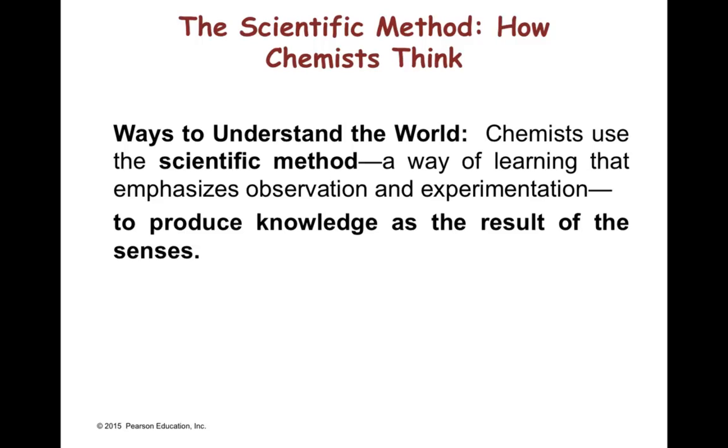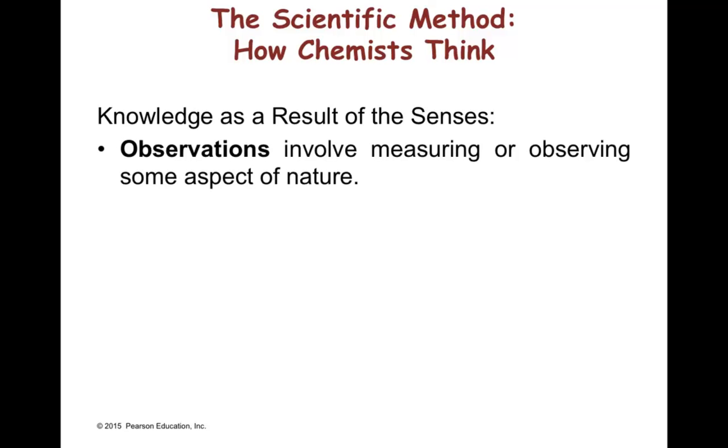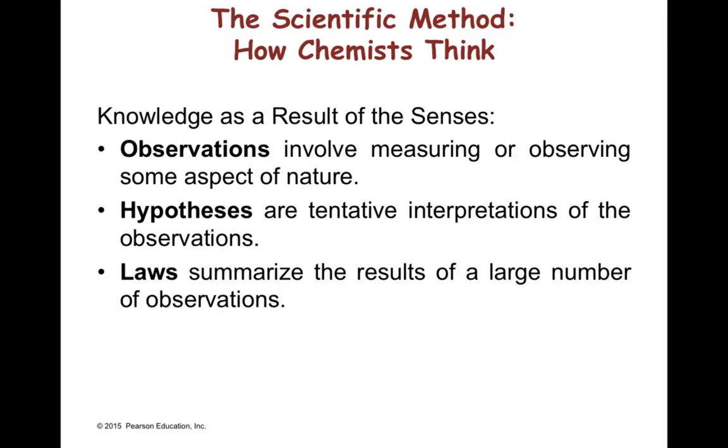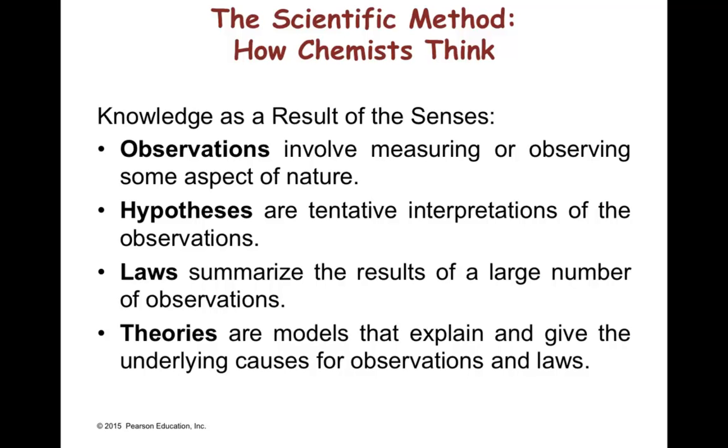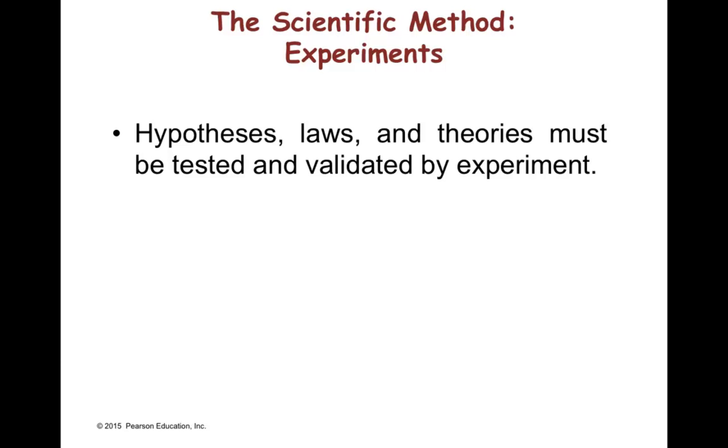Chemists use the scientific method, a way of learning that emphasizes observation and experimentation, to produce knowledge as the result of the senses. The scientific method is composed by four parts. Number one, observations that involve measuring or observing some aspect of nature. Number two, the hypothesis that are tentative interpretation of the observations. Number three, our laws, that summarize the results of a large number of observations. And number four is the theories. There are models that explain and give the underlying causes for observations and laws. There is a fifth component that is really important in the scientific method, and this one is the experiments. Hypothesis, laws, and theories must be tested and validated by experiment. If hypotheses are not confirmed, they are revised and tested through further experimentation.